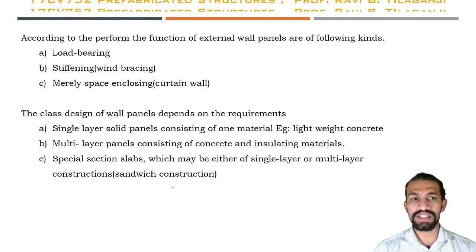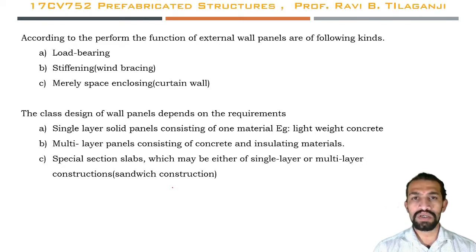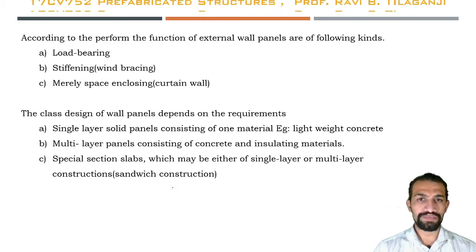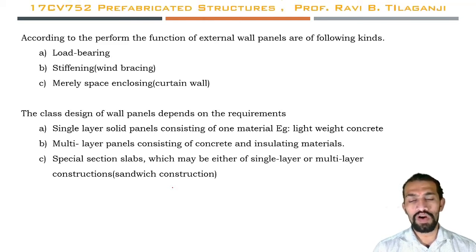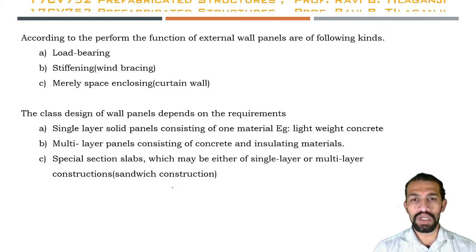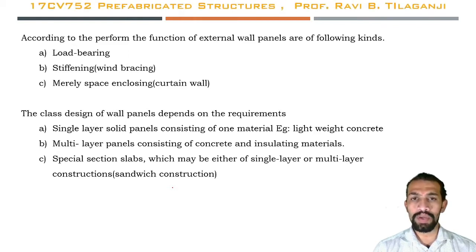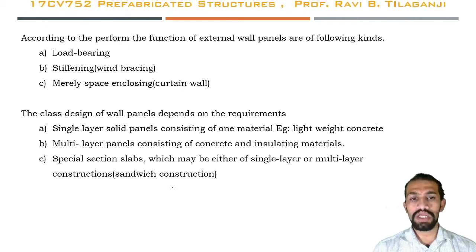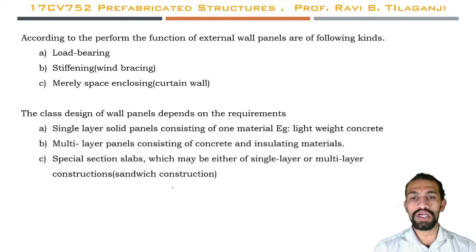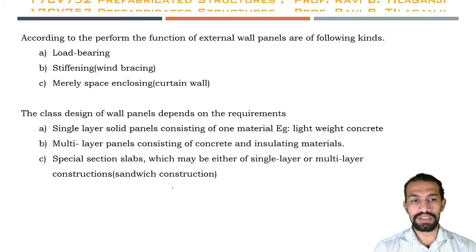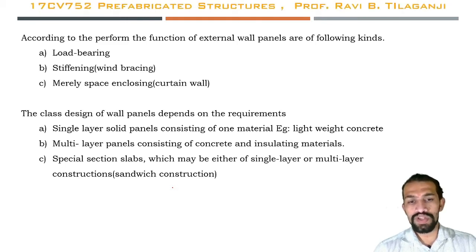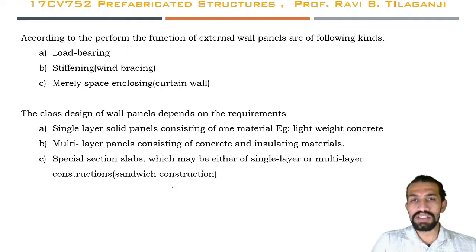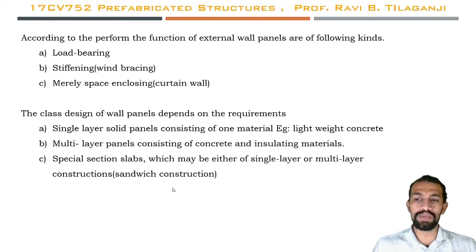External wall panels function as wind bracings, and as space-enclosing elements called partition walls or curtain walls. The class design of wall panels depends on requirements: single layer solid panels of one material such as lightweight concrete, multi-layer panels of concrete and insulating materials, and special section slabs which may be single layer or multi-layer sandwich type constructions.